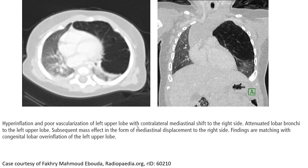CT case of lobar overinflation: hyperinflation and poor vascularization of the left upper lobe with contralateral mediastinal displacement. Attenuated lobar bronchioles to the left upper lobe with gastric displacement are noted, with subsequent mass effects consistent with congenital lobar overinflation of the left upper lobe.